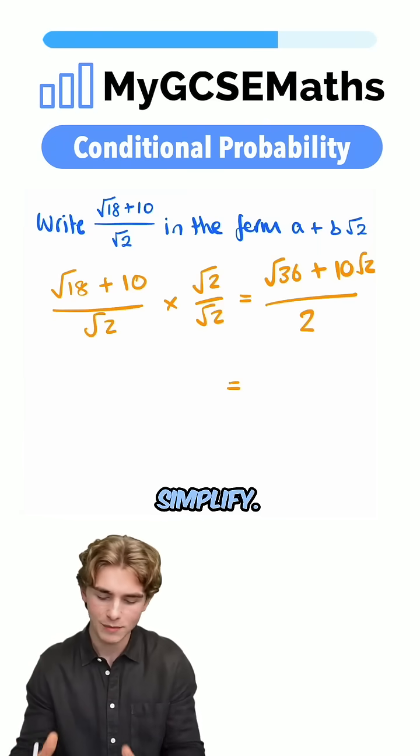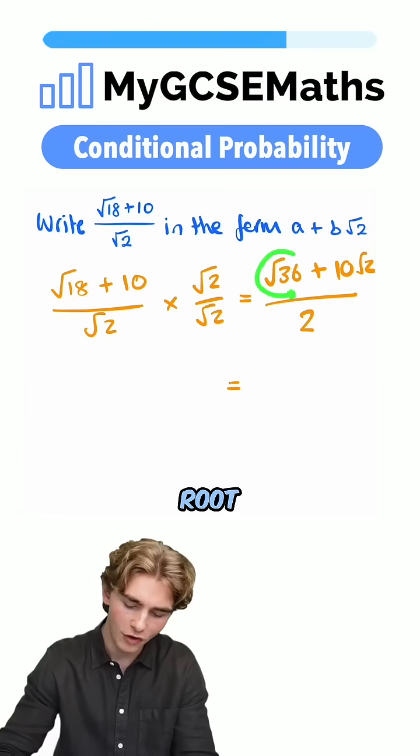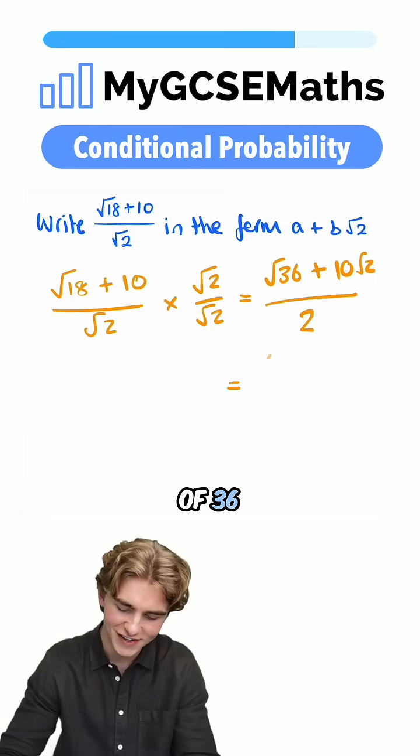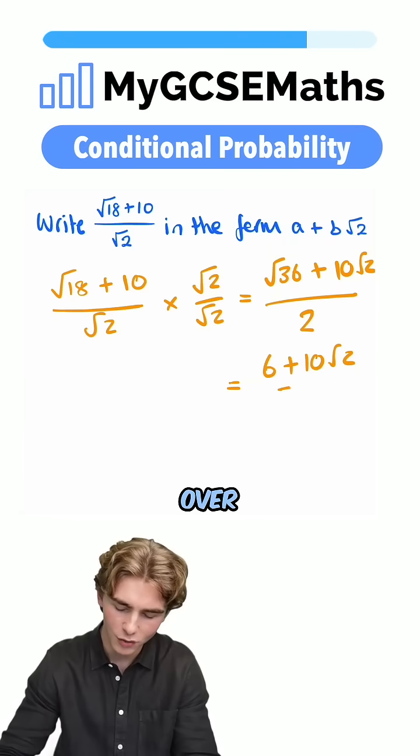So, we now have a fraction which we can simplify, we can calculate the square root of 36, the square root of 36 is 6, so we have 6 plus 10 root 2 over 2.